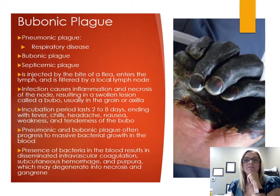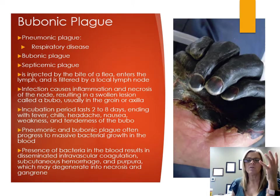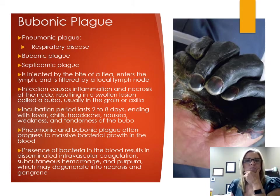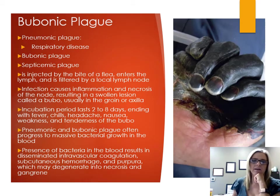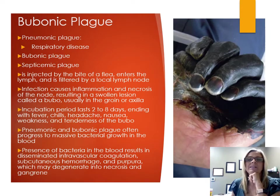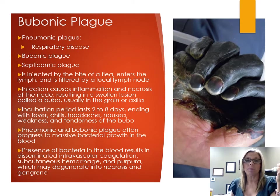Bubonic plague is caused by Yersinia pestis, a gram-negative rod. Symptoms include enlarged lymph nodes, fever, headaches, nausea, and weakness, leading to septicemia. The plague was thought to be caused by rats, but it was actually carried by the fleas on the rats. Yersinia pestis has a capsule and belongs to the Enterobacteriaceae family. There have been pandemics of bubonic plague since early recorded history. There are three types: pneumonic plague, which is a respiratory disease; bubonic plague; and septicemic plague.